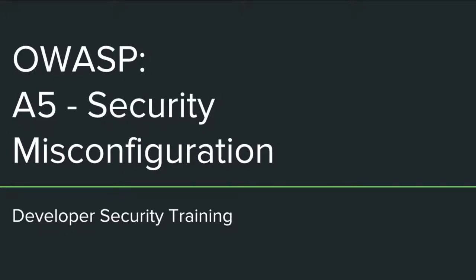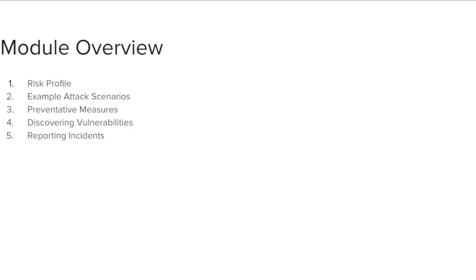This training module covers OWASP A5 Security Misconfiguration. The module is divided into five sections: risk profile, example attack scenarios, preventative measures, discovering vulnerabilities, and reporting incidents.